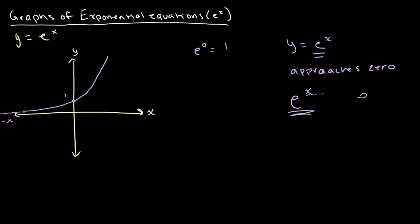This is because any number to a negative power — let's say e to the power of negative a — is the same thing as 1 over e to the power of a. As the value of a becomes more negative, or as this value increases, this becomes closer to 0. Therefore, our graph is approaching 0, but it never actually touches it because you can't take e to any power and obtain the value of 0.